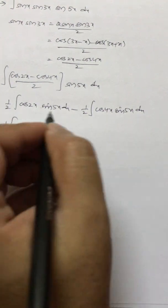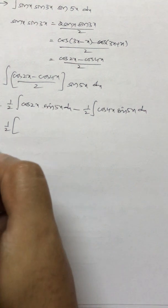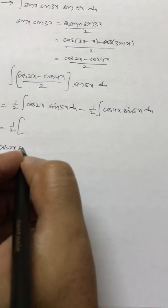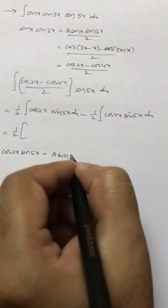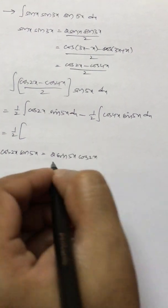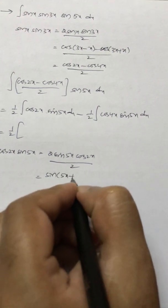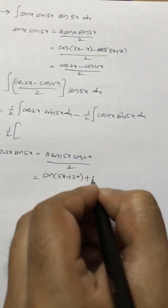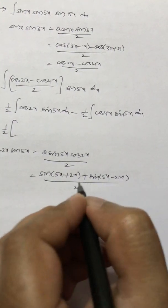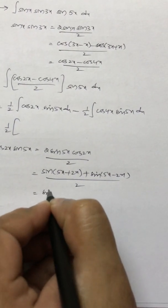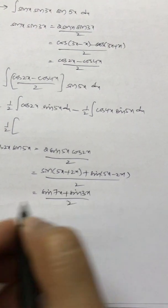First we'll apply transformation here, so cos 2x sin 5x. Multiply and divide by 2, so 2 sin 5x cos 2x by 2. This is sin(5x + 2x) plus sin(5x - 2x) by 2, which equals sin 7x plus sin 3x by 2.